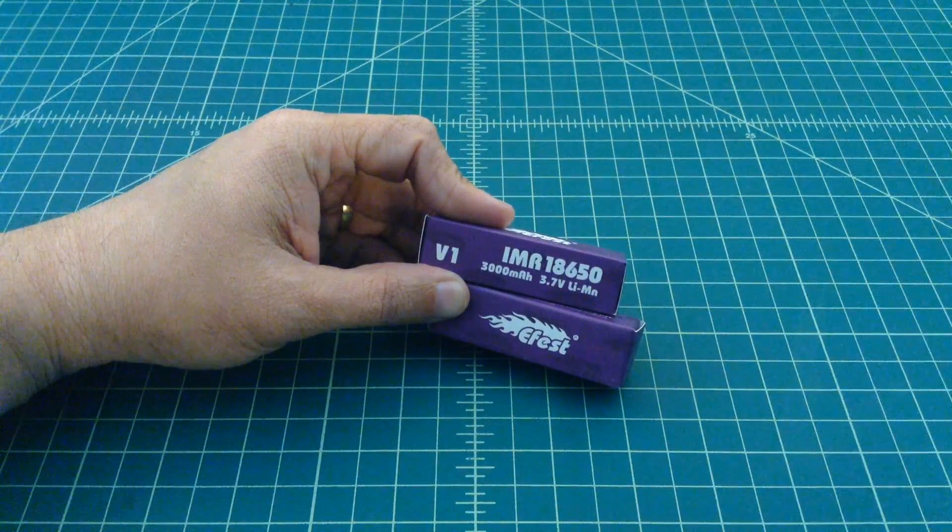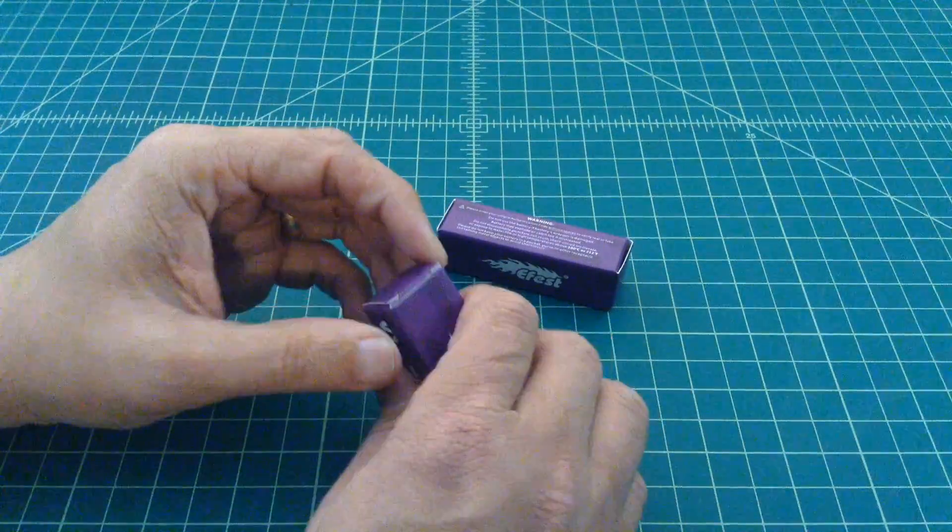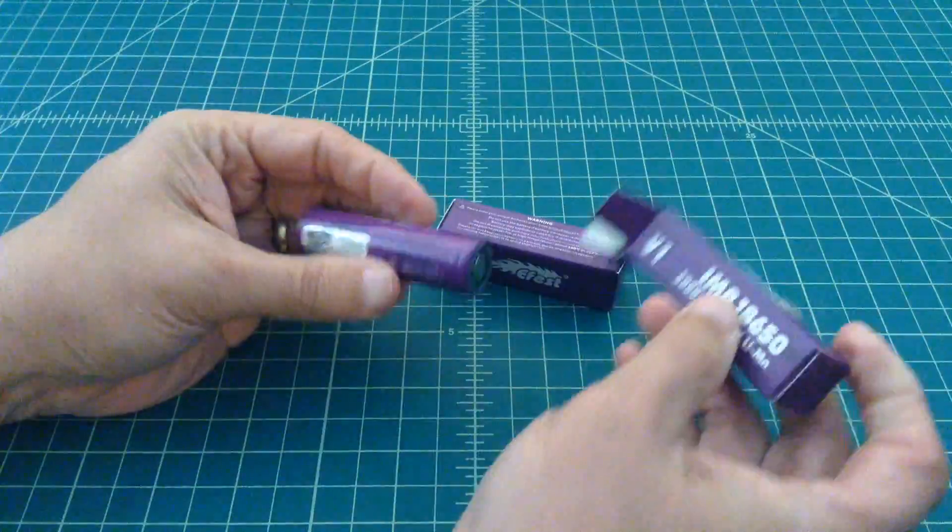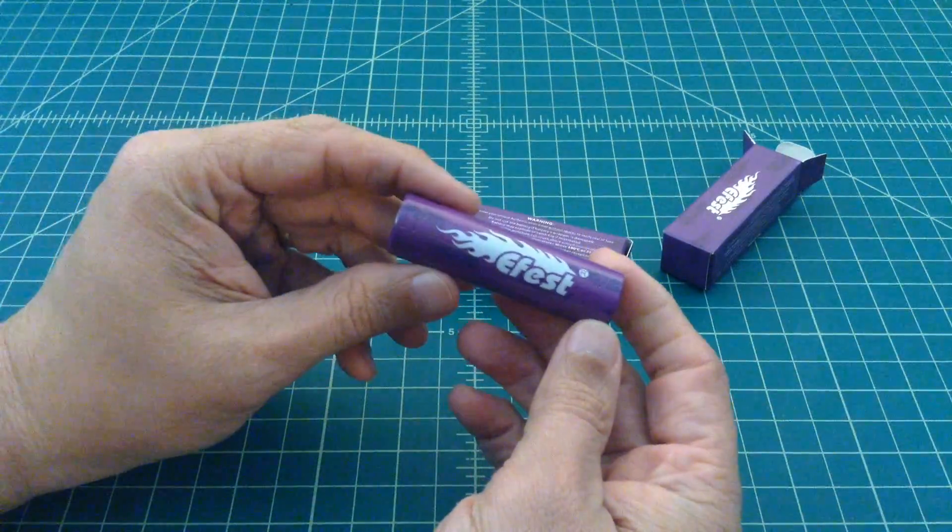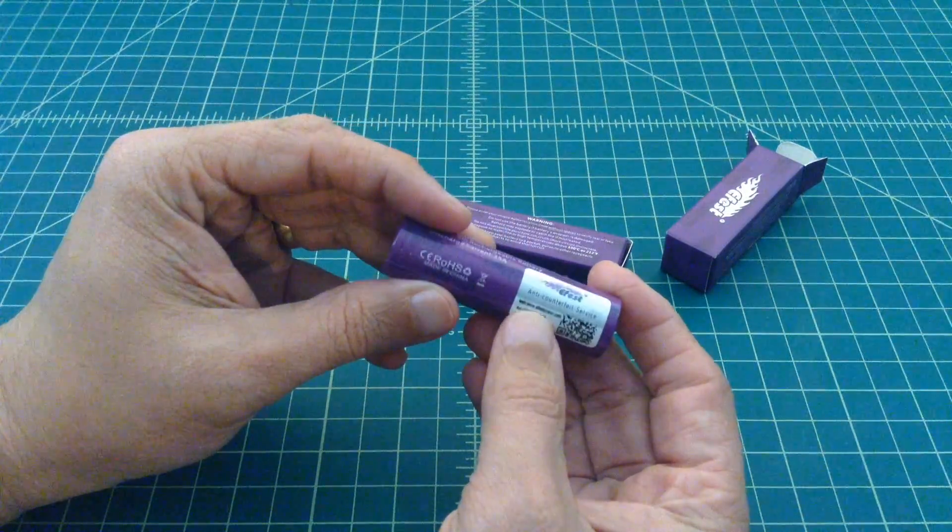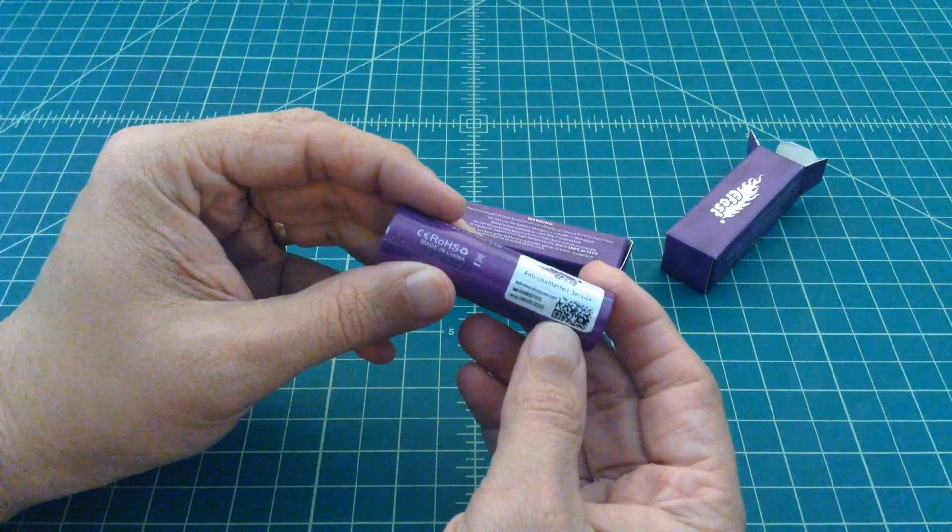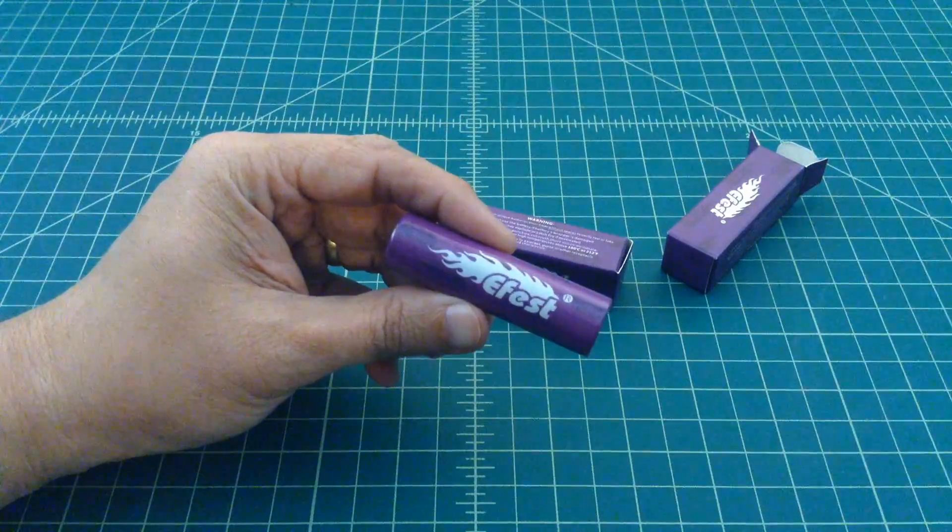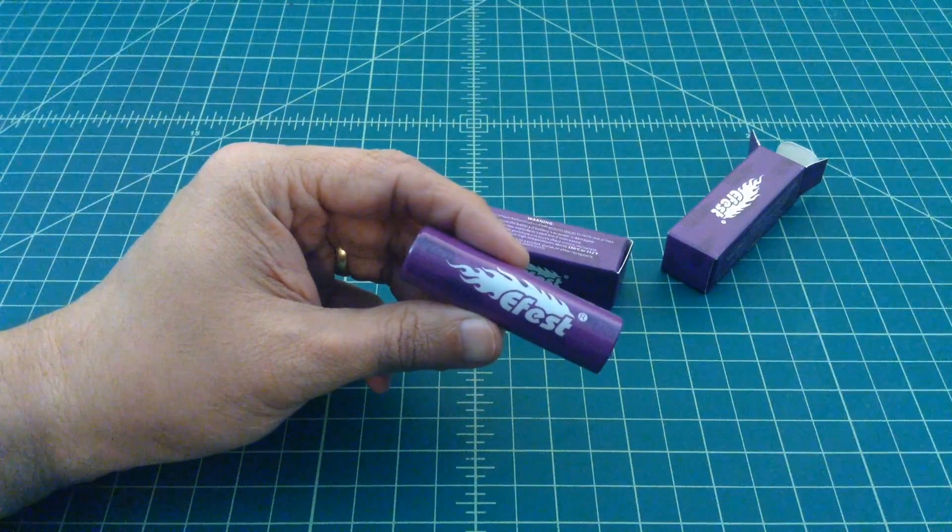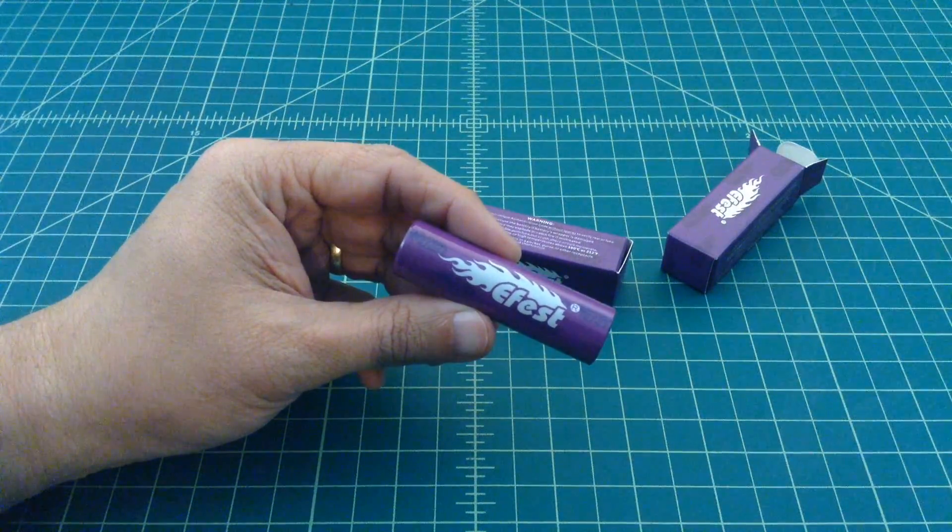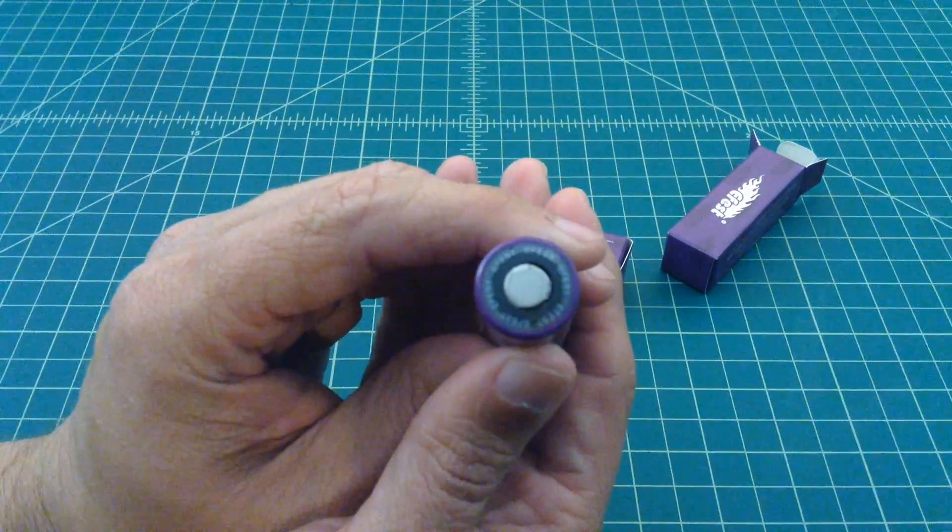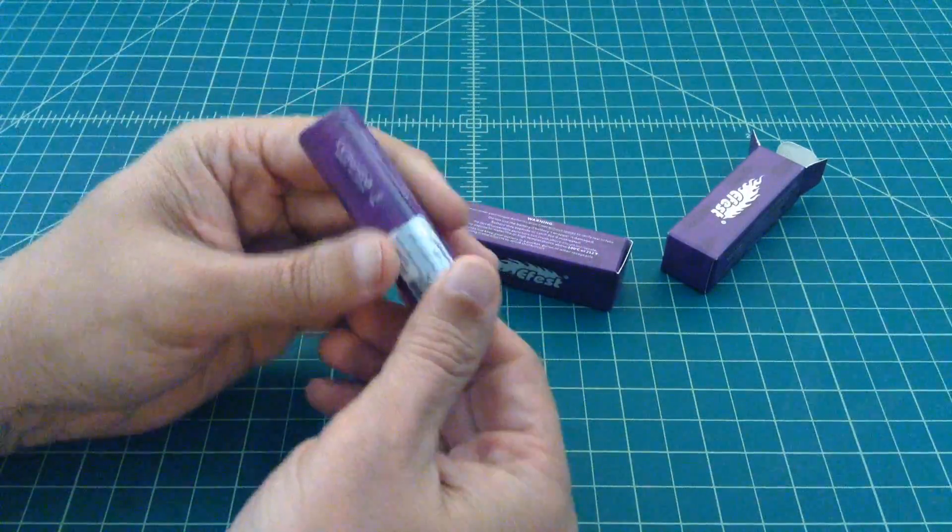So let's open these up and see what they look like. I'm going to destroy this box getting this out of here, but that's okay. So these are known as eFest purple batteries and they actually have some anti-counterfeit services on here where you can scratch this off, get a code number, and scan this barcode in on your phone or whatever device you're using to check with the manufacturer, make sure they're not counterfeit. What's amazing is that in the world of batteries, tons of stuff are counterfeit and lithium-ion batteries are no exception.